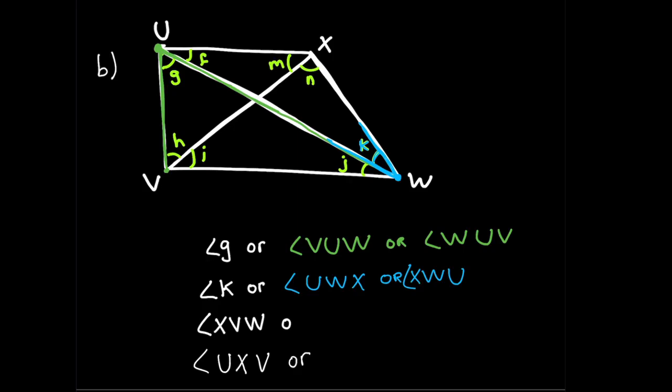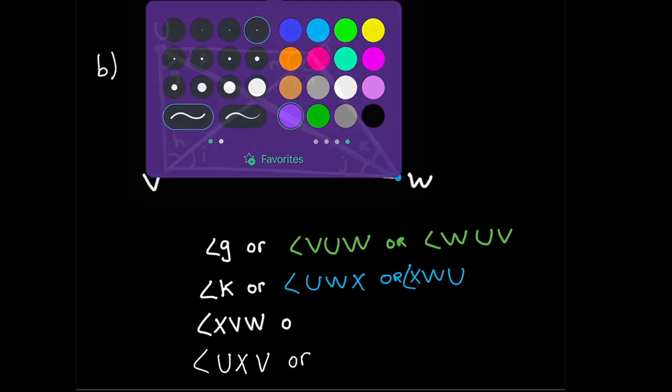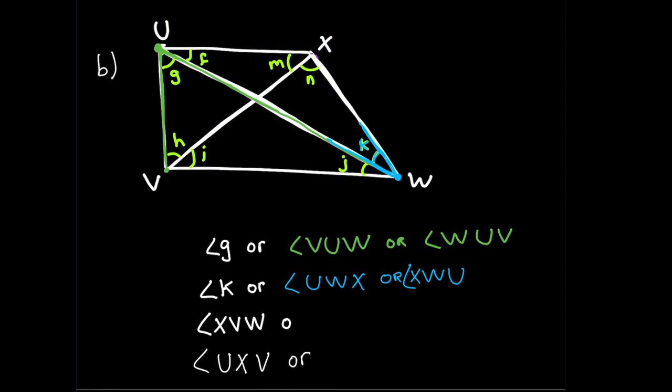It's only asking for another name, but I'm writing both names. So in case you got one of them, then you can compare your answers with me. Another one is angle XVW. Let's find it. I'm going to choose purple. XVW. It's right here. So when I go over the lines, what angle does it create? XVW. The angle is I. So we say or angle I. That's it. Or we say WVX.